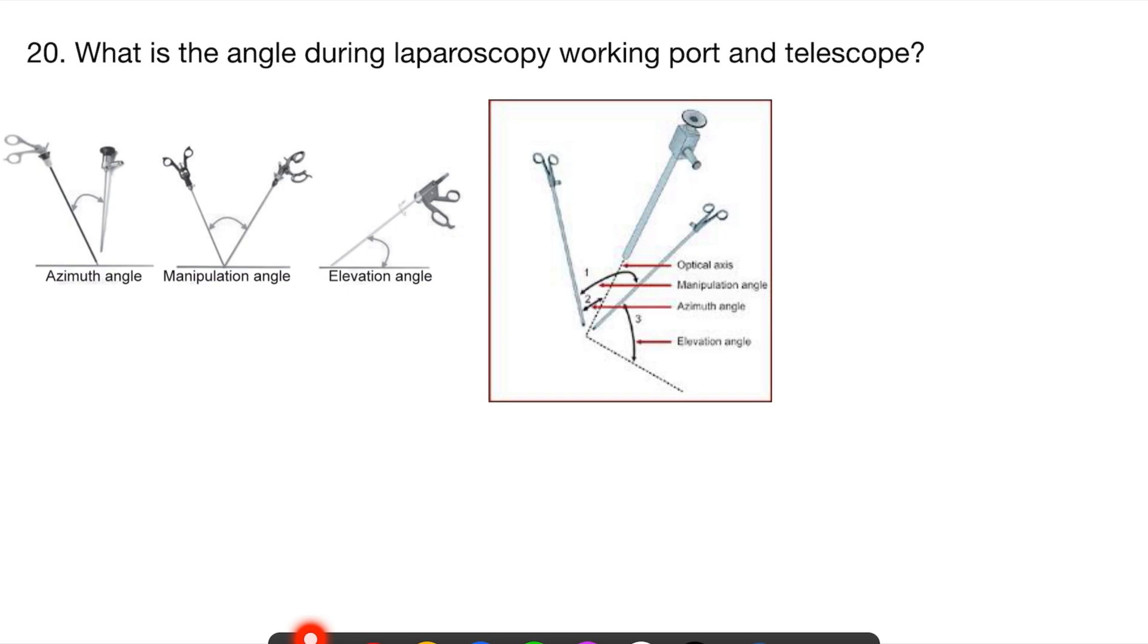Finally, this was something which is very new to all of us, at least for me. What is the angle during laparoscopy working port and the telescope? This is the working port and this is the telescope. We are seeing through it and we are working through this. So the angle between these two ports is known as azimuth angle, which is usually 60 degrees.